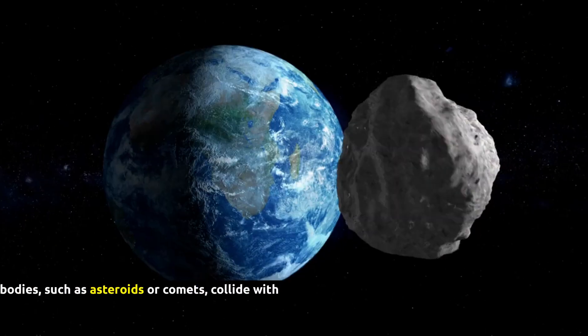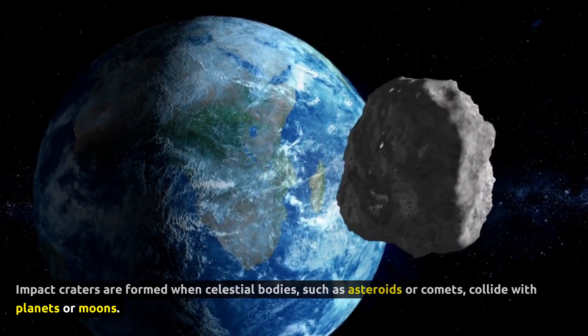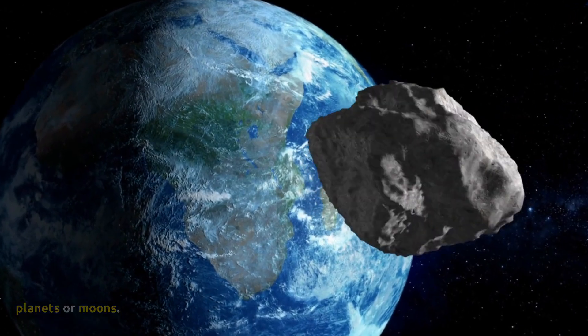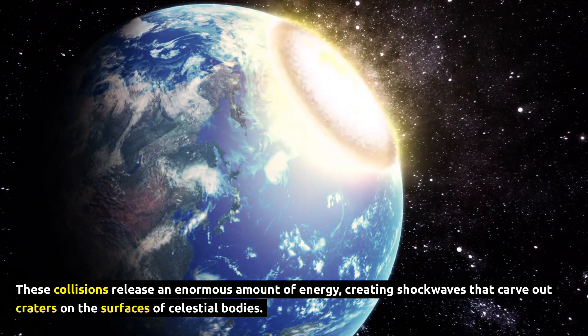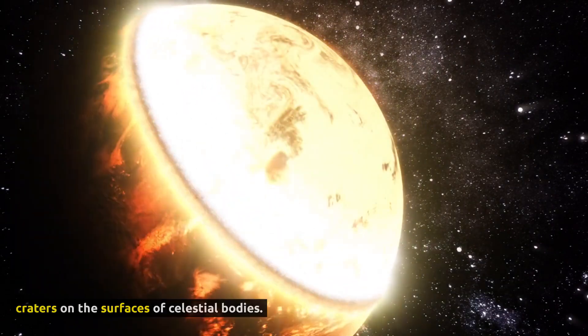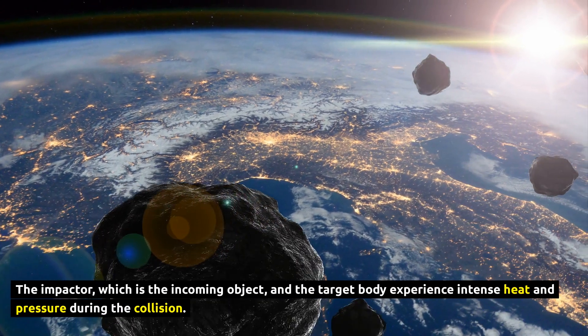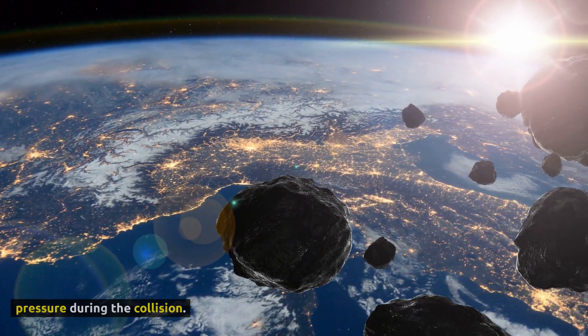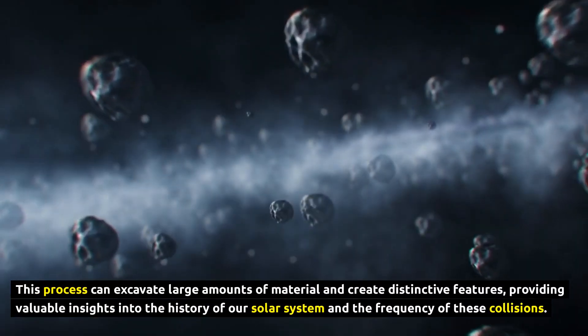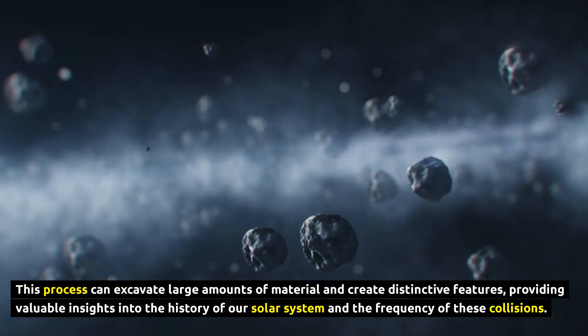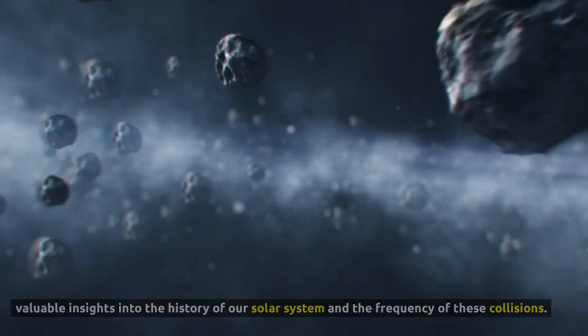Fact number 7, Impact Crater Formation. Impact craters are formed when celestial bodies, such as asteroids or comets, collide with planets or moons. These collisions release an enormous amount of energy, creating shockwaves that carve out craters on the surfaces of celestial bodies. The impactor, which is the incoming object, and the target body experience intense heat and pressure during the collision. This process can excavate large amounts of material and create distinctive features, providing valuable insights into the history of our solar system and the frequency of these collisions.